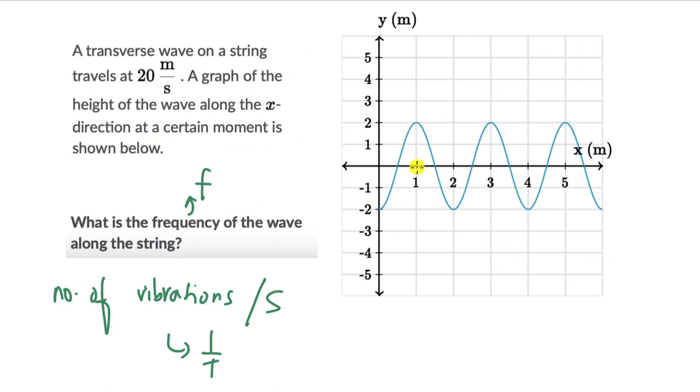Now in this graph, we know the height of all the particles in a snapshot of time. So the entire string is oscillating and this is a snapshot in time when we see the displacement of each and every point on the string. The good thing is that we know the speed.